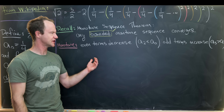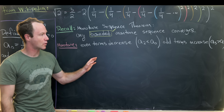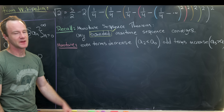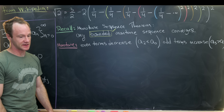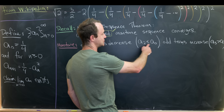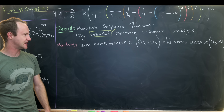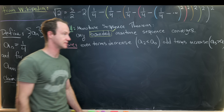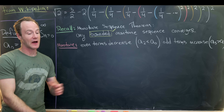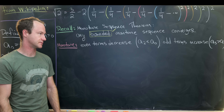We're going to show that the even terms form a decreasing sequence, whereas the odd terms form an increasing sequence, and we'll prove each of those by induction. The base case for the even terms is A₂ < A₀, and the base case for the odd terms is A₃ > A₁.